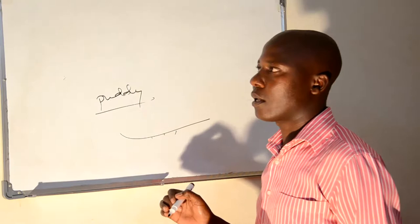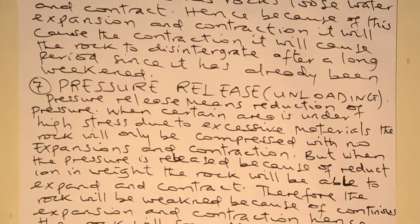Another, or the last one, is pressure release or unloading. Whenever we talk about pressure, this will refer to the energy or force which can be taking place from within the rock mass. This is the landmass, but there is a certain force which is forced from within the surface onto the surface.